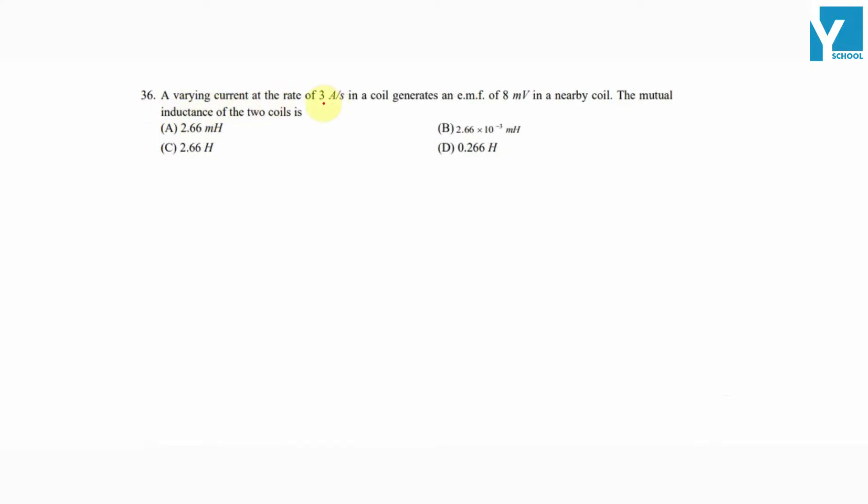A varying current at the rate of 3 amperes per second in a coil generates an emf of 8 millivolts in a nearby coil. The mutual inductance of the two coils is the question. This varying current, with di/dt equal to 3 amperes per second, generates an emf.